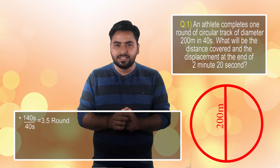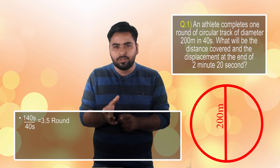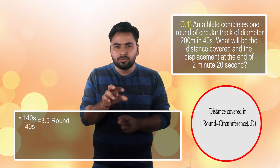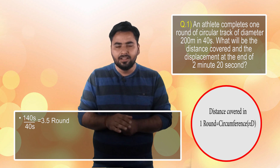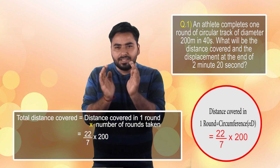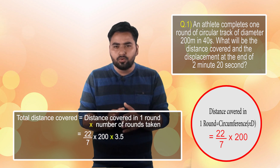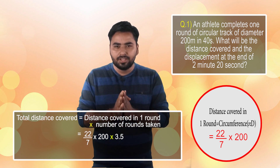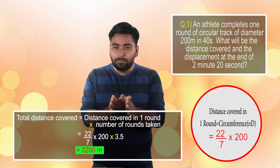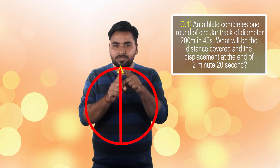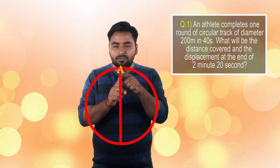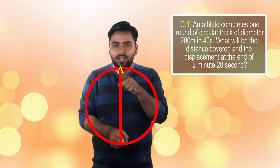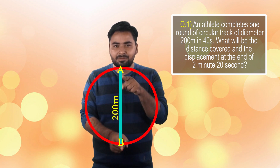So the number of rounds is known. In 3.5 rounds, the athlete starts at point A, completes 3 full rounds, and ends at the diametrically opposite point B after the half round. So the displacement is the diameter, and the answer is 200 meters.